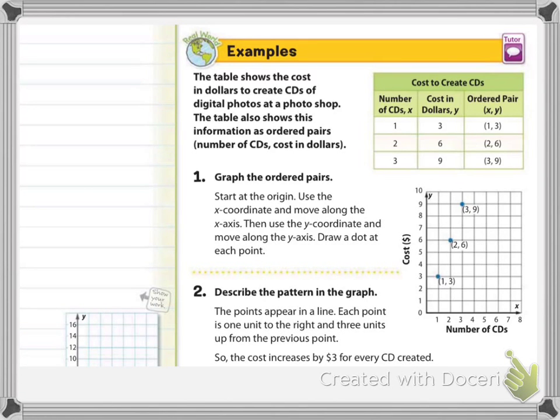Look at example number one. The table to the right shows the cost in dollars to create CDs of digital photos at a photo shop. Now you guys, the information in this table is already given to you in this one. So the table also shows this information is ordered pairs, which is the number of CDs goes first and the cost in dollars goes next. Now the part we're talking about is this right here. You'll notice here that I put a red box around one and three. So for instance, what it means is if you purchase one CD, the cost would be three dollars. So the way that they write that is the ordered pair (1, 3). And that's where the arrow is pointing there. So they just took the first column number and the second column number and they put it together.